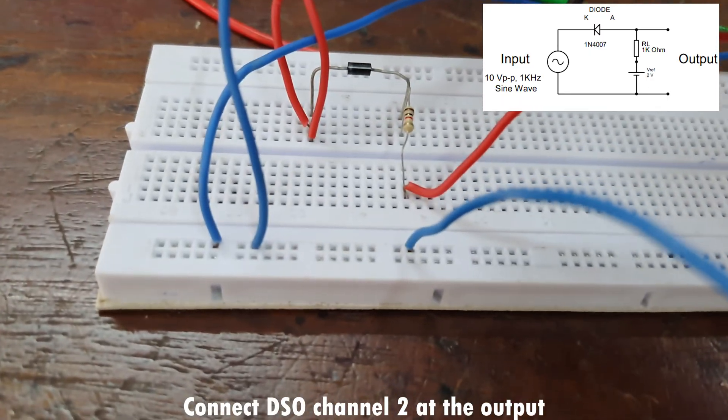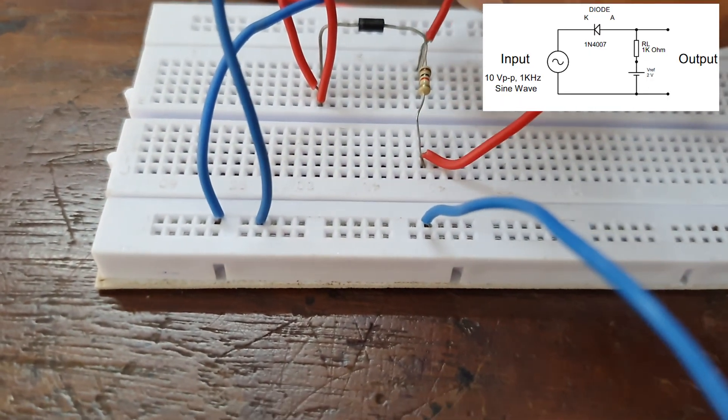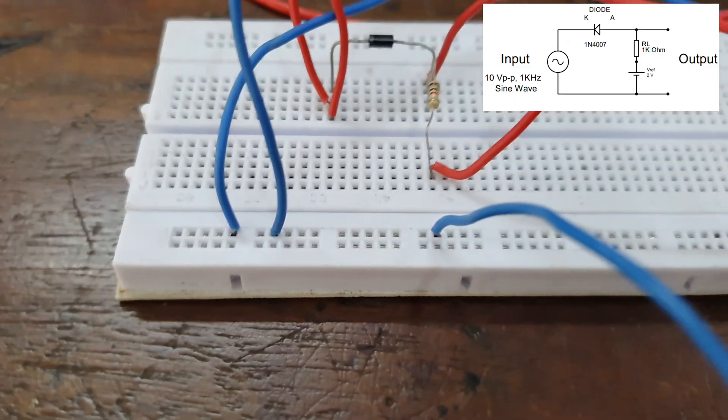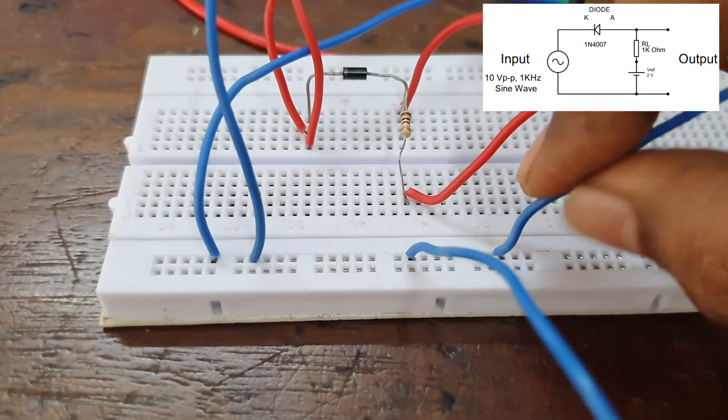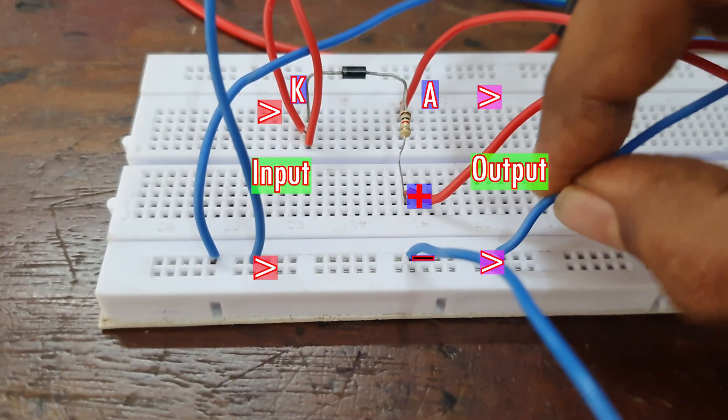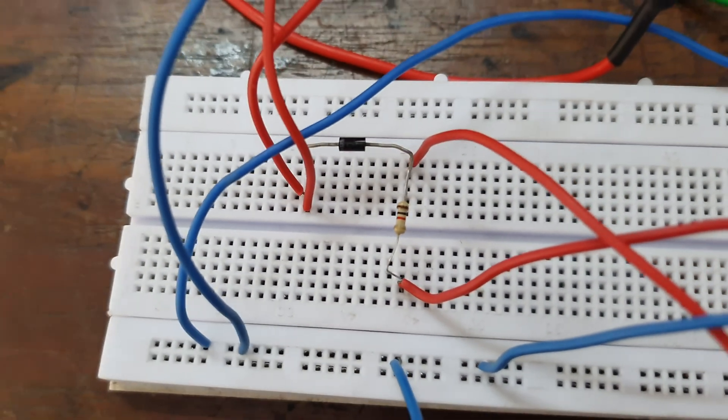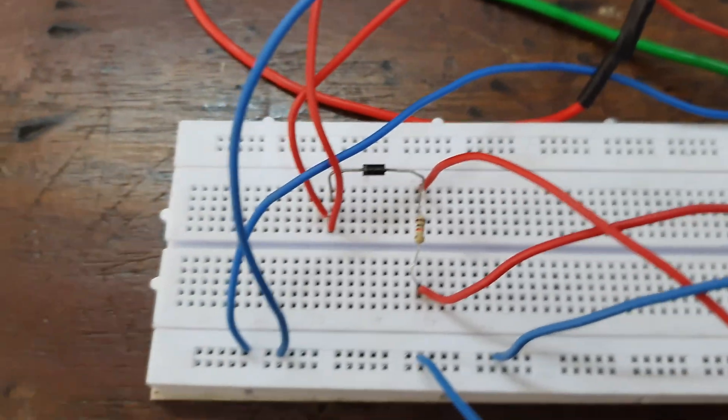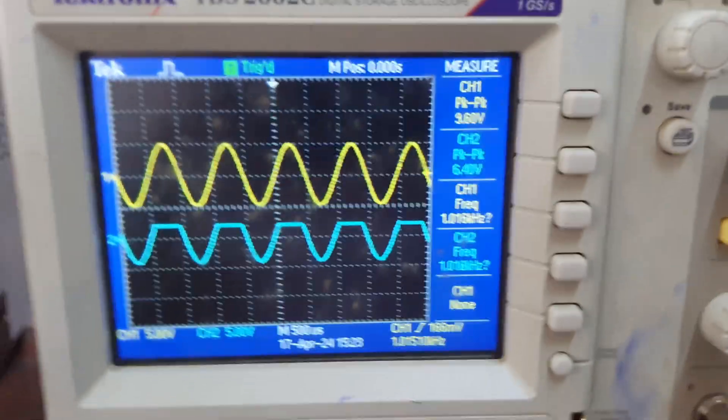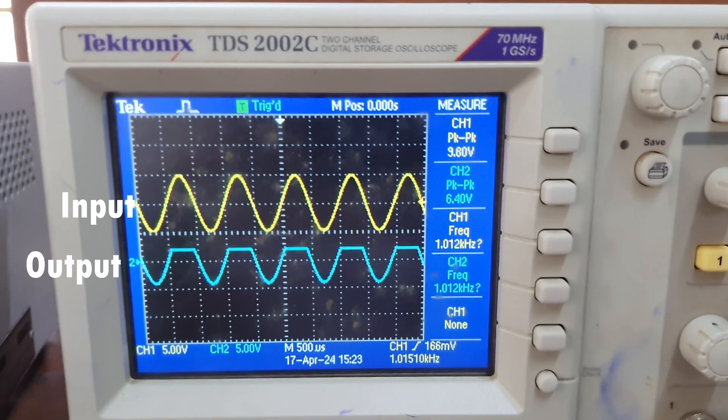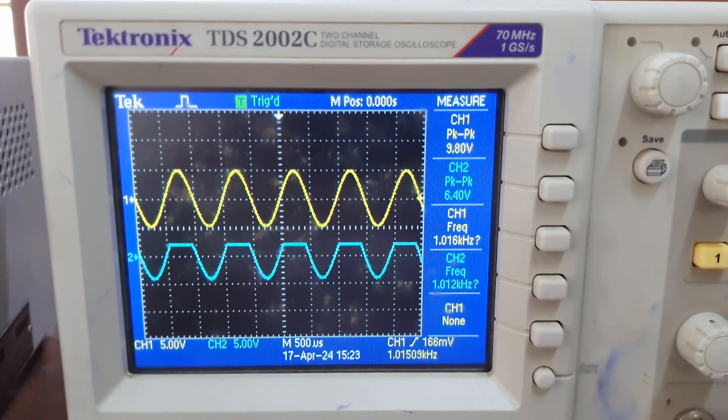Now connections are complete. You can see both input and output on the DSO. Yellow is the input and blue is the output.